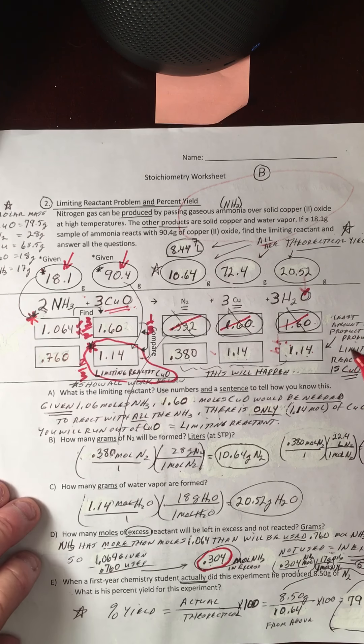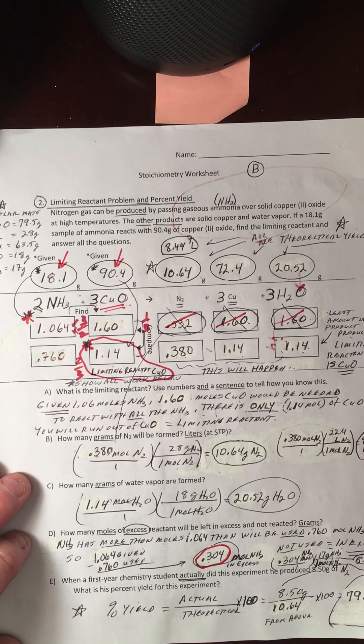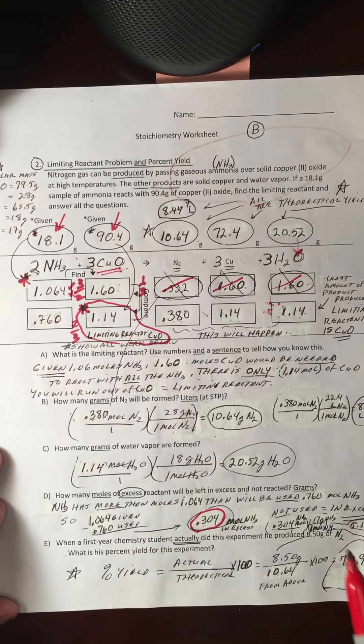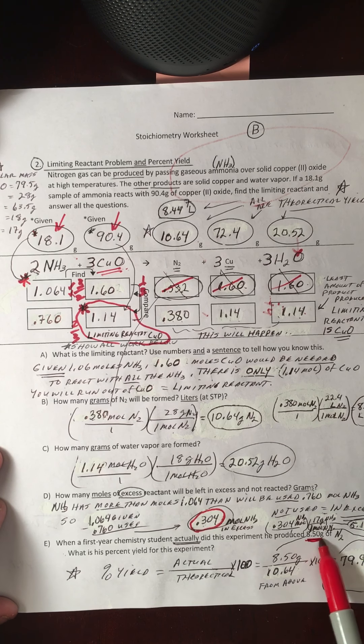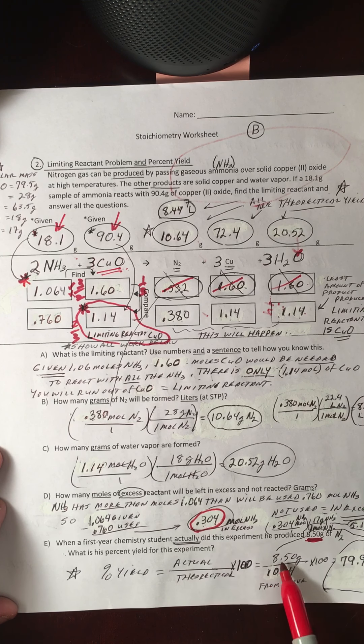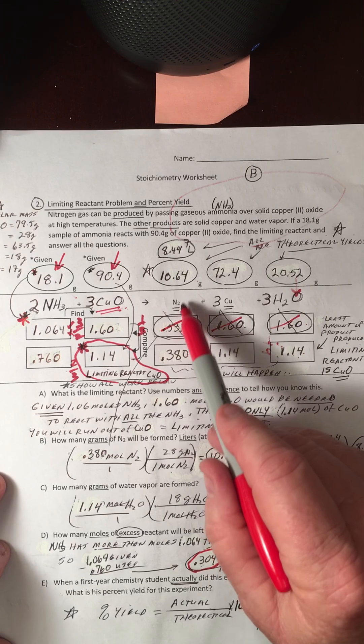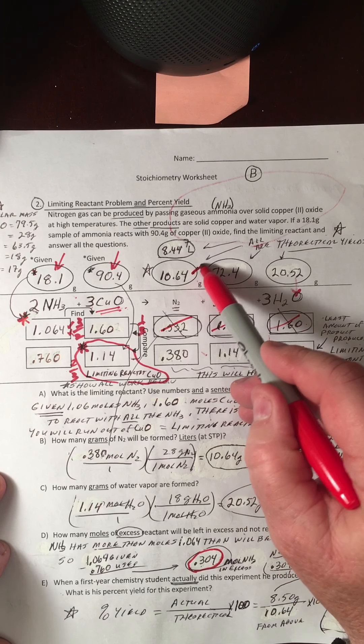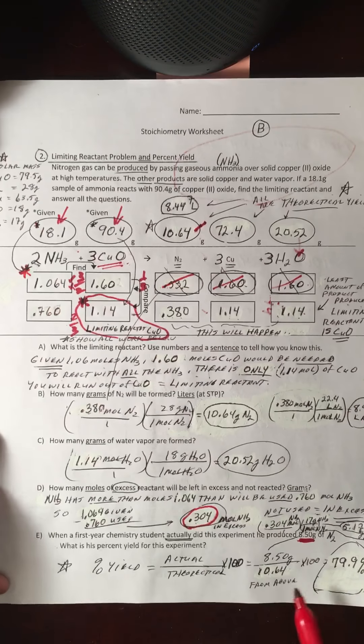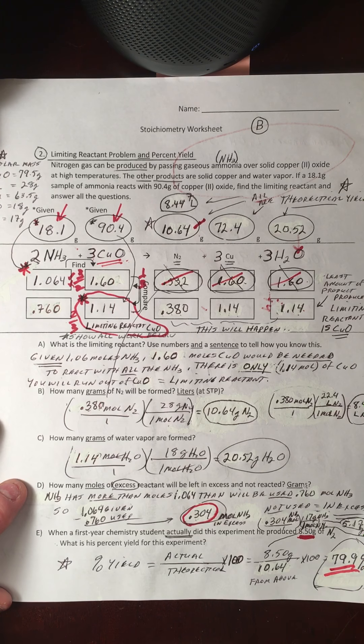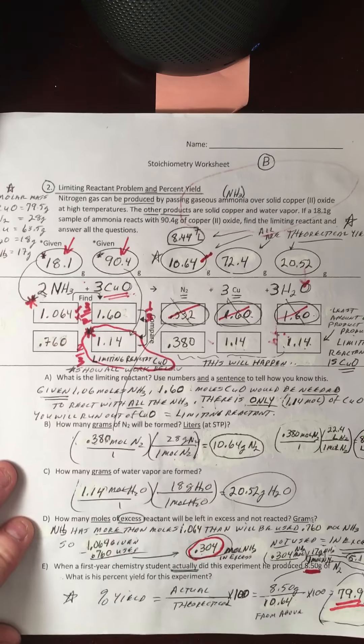Let's do the percent yield again. It says here, a first year chemistry student actually did this experiment and produced 8.5 grams, that's the actual yield, there we go. What's the theoretical yield of N2? Well, N2, there we go, there you are. There's the theoretical yield, 10.64. Put it down here times 100. Almost 80% yield, not a bad experiment.